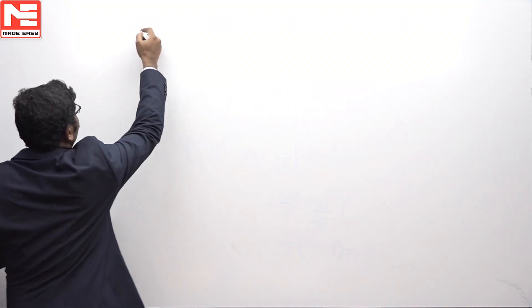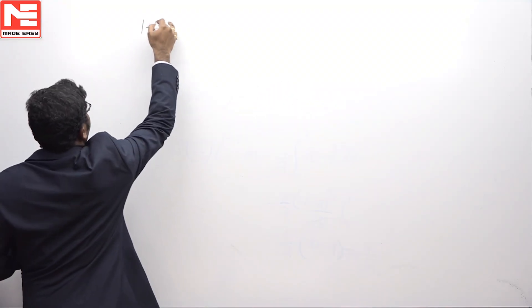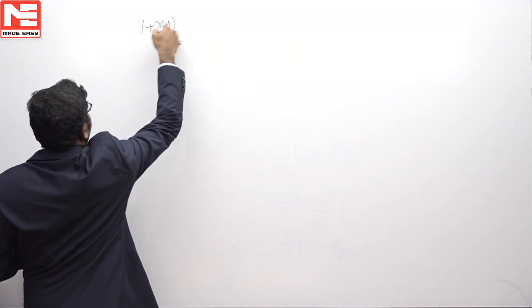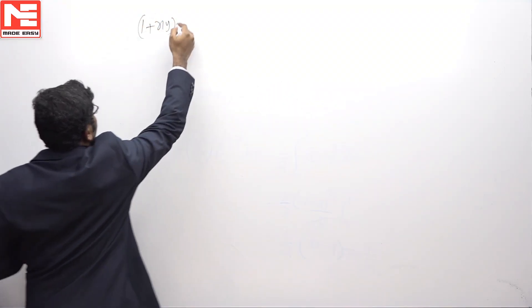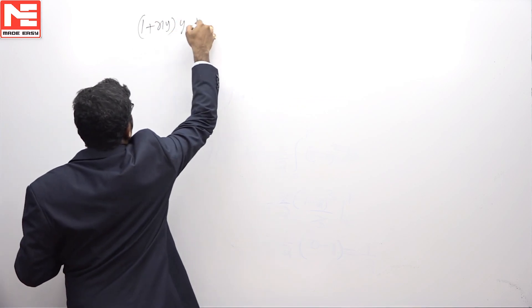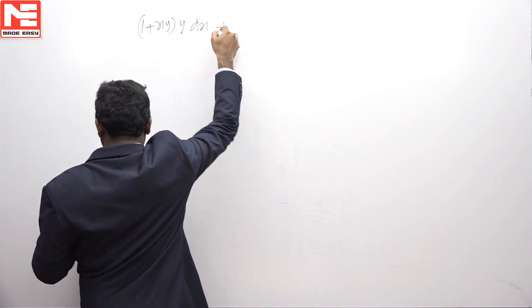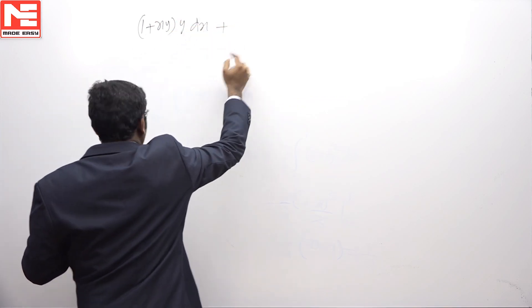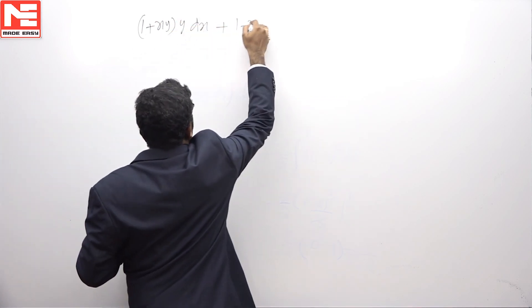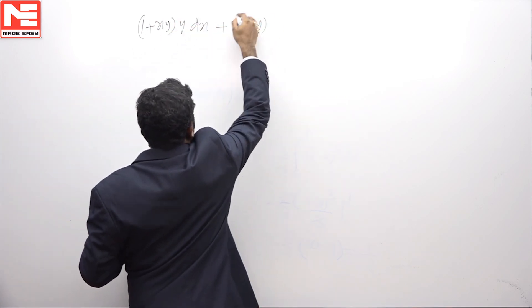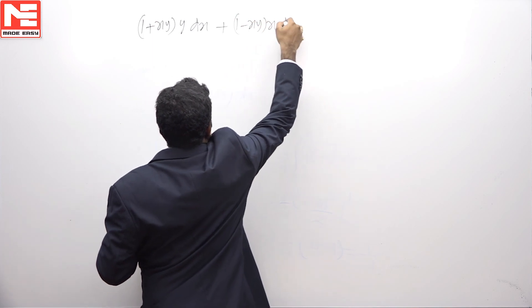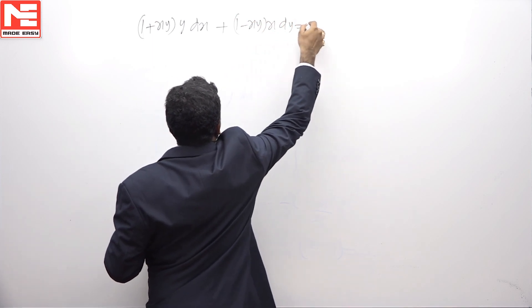In this problem, we have to solve the differential equation (1 + xy)y dx + (1 - xy)x dy = 0.